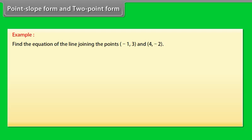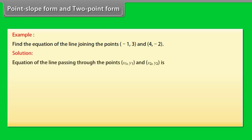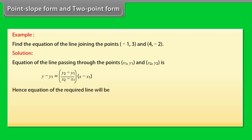Two-point form: We can find the equation of a line if we know any two points on it, X1(Y1) and X2(Y2). Example: Find the equation of the line joining the points (minus 1, 3) and (4, minus 2). Solution: Using the two-point form Y minus Y1 equals [(Y2 minus Y1) divided by (X2 minus X1)] times (X minus X1), the equation of the required line is X plus Y minus 2 equals 0.